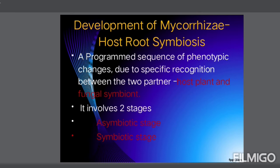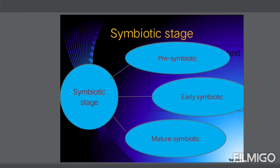Development of mycorrhiza: how plants uptake nutrients from the VAM fungi, and how plants supply nutrients to the VAM fungi for their growth. It involves two stages: asymbiotic stage and symbiotic stage. The asymbiotic stage means in the absence of the host, the fungus lives for some days. The symbiotic stage involves three phases: pre-symbiotic, early-symbiotic, and mature-symbiotic.